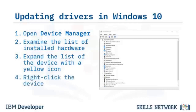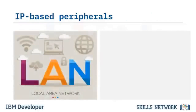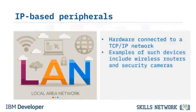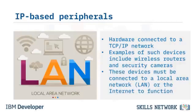Right-click the device you'd like to update and select Update Driver. An IP-based peripheral is hardware connected to a TCP/IP network. Examples of IP-based peripherals are wireless access points, wireless routers, IP security cameras, network print servers, and networked printers or multifunction devices. These devices must be connected to a local area network or LAN, or the Internet, for installation and functionality. When you install a device, you get it ready for use; when you configure a device, you're setting it up to work according to your preferences.